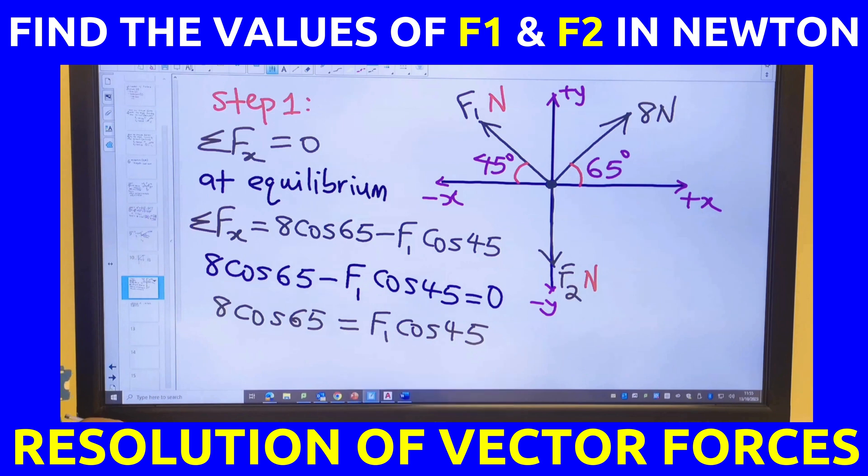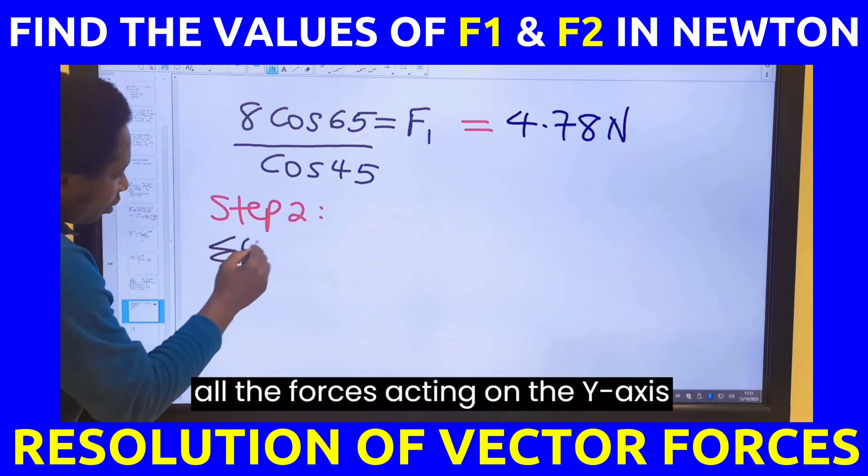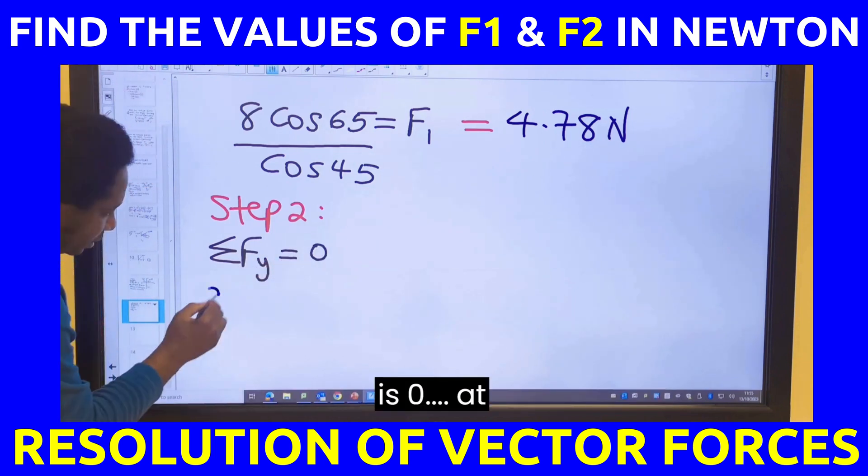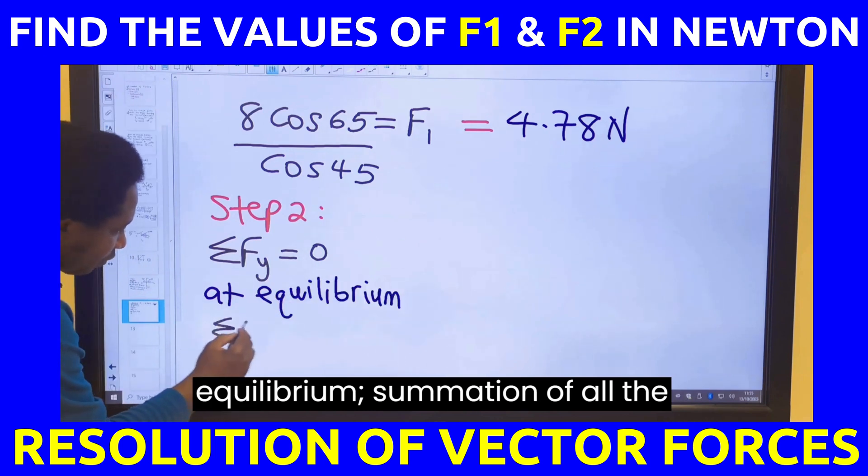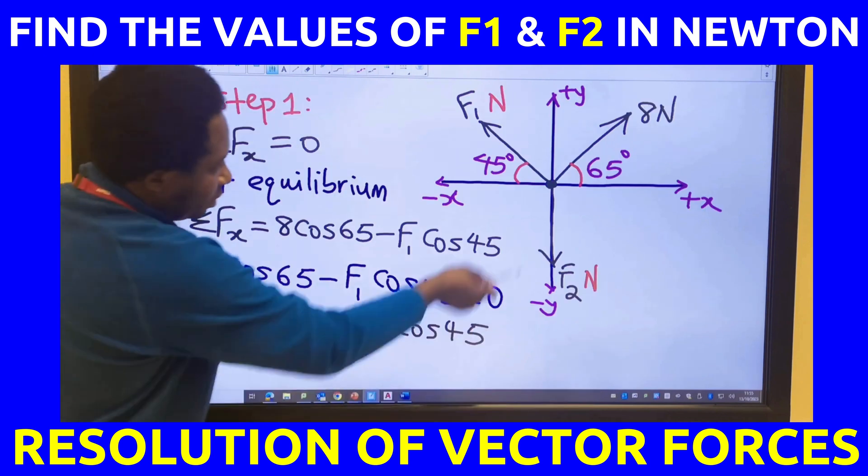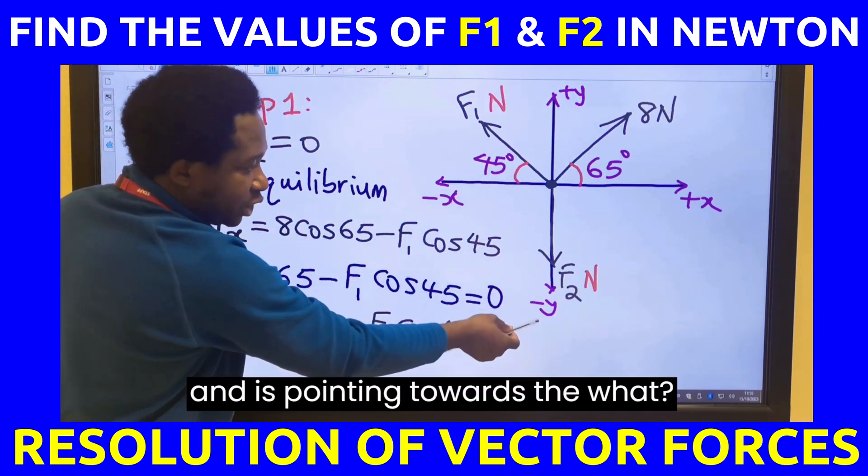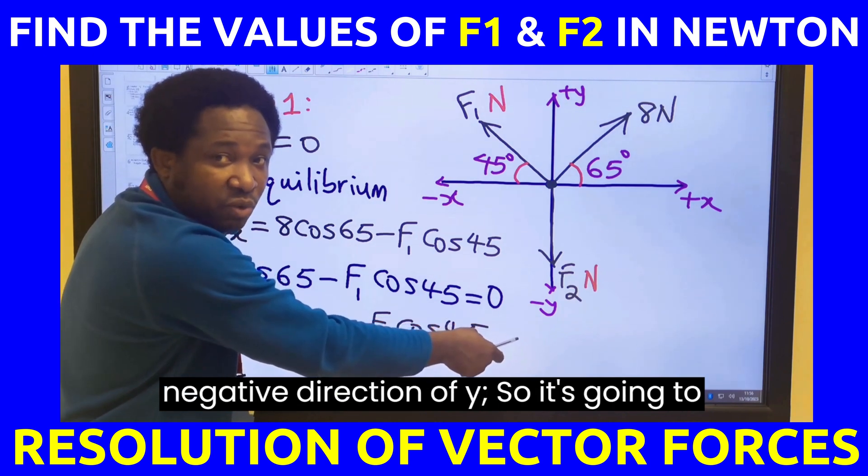Next, step 2. Summation of all the forces acting on the y-axis is 0 at equilibrium. This is on the y-axis, F2, and it's pointing towards the negative direction of y.